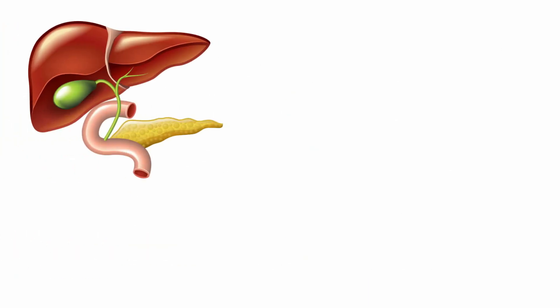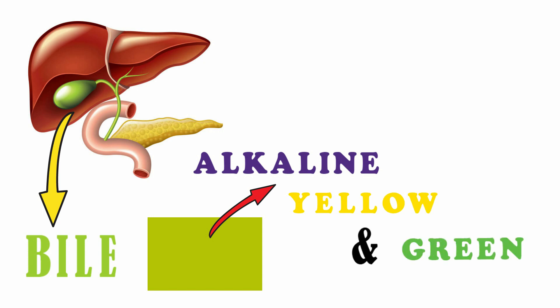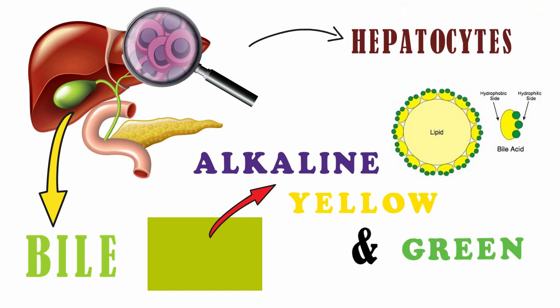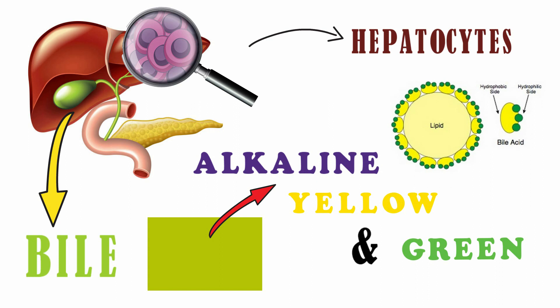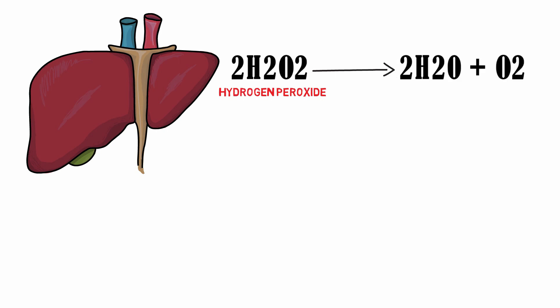The liver produces bile, which is an alkaline yellow and green fluid secreted by hepatocytes. Bile is stored in the gallbladder and discharged into the duodenum, where bile salts process the digestion of lipids by emulsification. The pH of bile is 7.5.